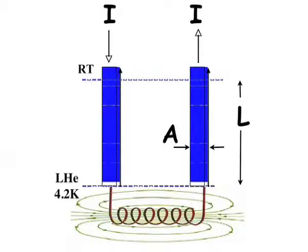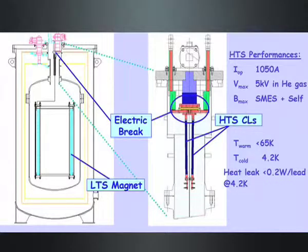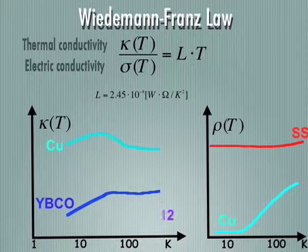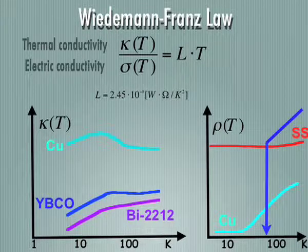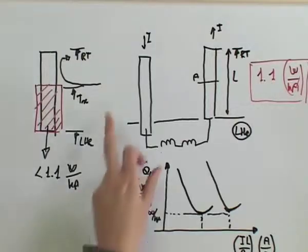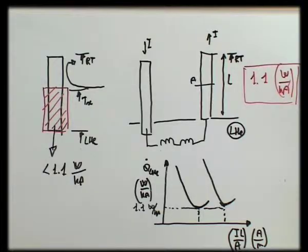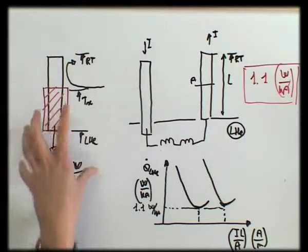Our aim is to minimize the heat load into the cryogenic environment in order to save liquefaction power, by replacing the colder part with a new material which ideally has no resistivity and possibly a low thermal conductivity. Superconductors with zero electrical resistivity below the transition temperature TC offer an escape from the Wiedemann-Franz law. A very low thermal conductivity and zero resistivity makes superconductors an ideal material for current leads, enabling us to build what we call a binary lead — consisting of a normal resistive part and a superconducting part.